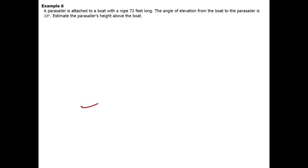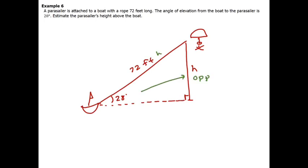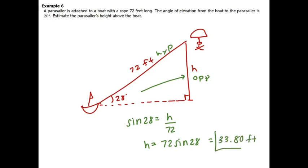Last example: a parasailor is attached to a boat with a rope 72 feet long. The angle of elevation from the boat to the parasailor is 28°. We want to find how high the parasailor is above the boat. In relation to the 28° angle, h is opposite and 72 (the rope) is the hypotenuse, so we use sine: h equals 72 times sine of 28°, which gives approximately 33.80 feet.